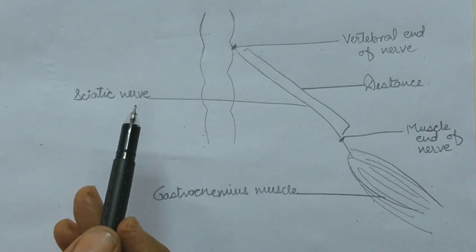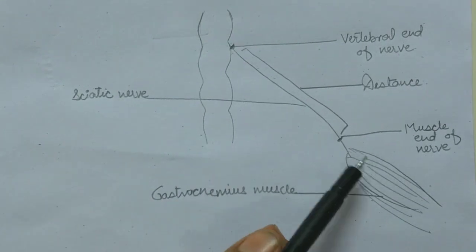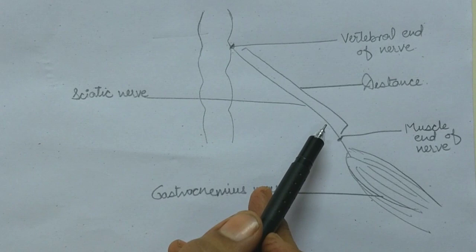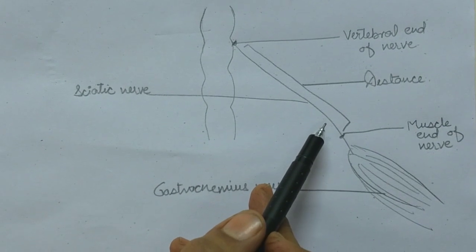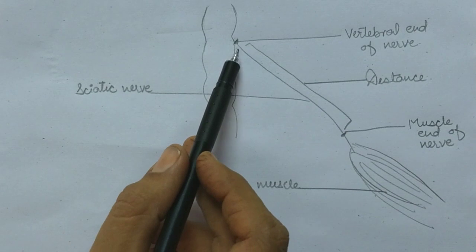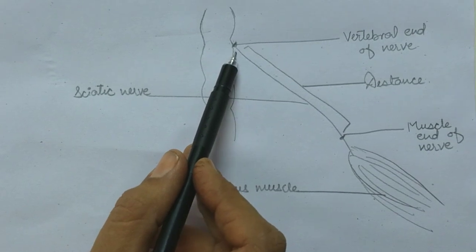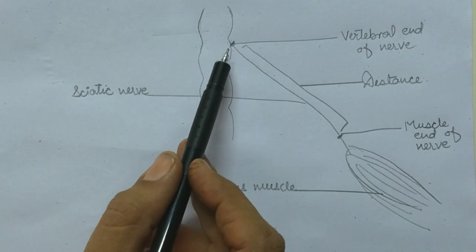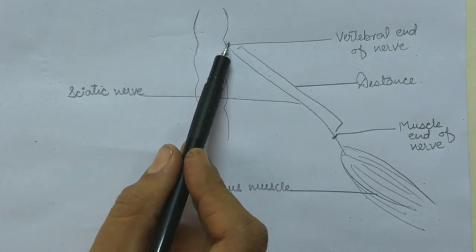Procedure: Make a gastrocnemius sciatic nerve muscle preparation and setup to record the simple muscle twitch. Now, stimulate at the vertebral end of the nerve and record simple muscle twitch. Mark the point of placement of the electrode on the nerve here.